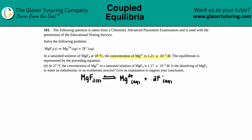The equilibrium is represented by the preceding equation. Now at letter D: at 27 degrees Celsius, the concentration of Mg²⁺ in a saturated solution of MgF₂ is 1.17 times 10 to the negative third molarity. Is the dissolving of MgF₂ in water an endothermic or an exothermic process? Give an explanation to support your conclusion.